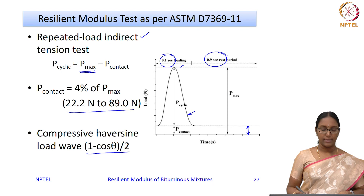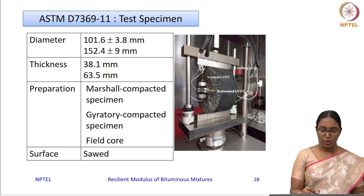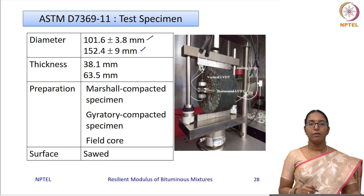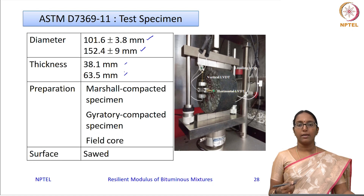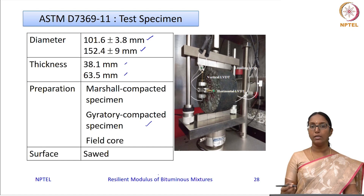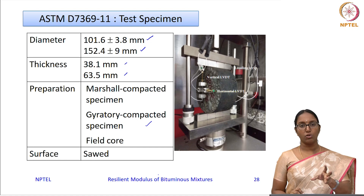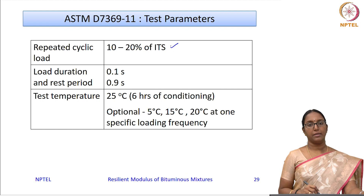The compressive haversine load applied is of the form (1 − cos θ)/2. Specimen dimensions are a diameter of 101.6 mm or a larger diameter of 152.4 mm, with thickness of 38.1 or 63.5 mm. Specimens can be cast using Marshall compaction, a gyratory compactor, or field core samples, provided the surface is sufficiently neat. The load to be applied is 10 to 20 percent of ITS.